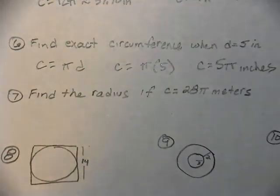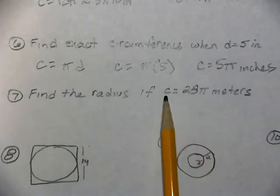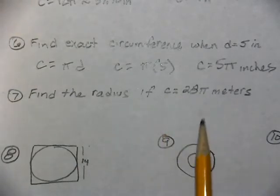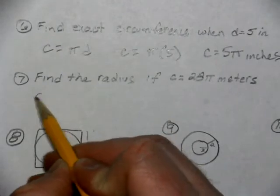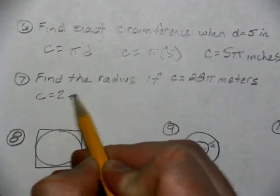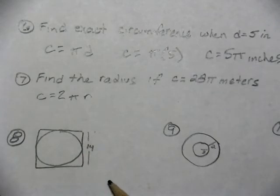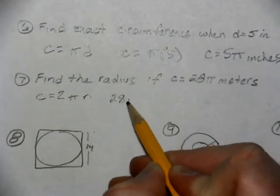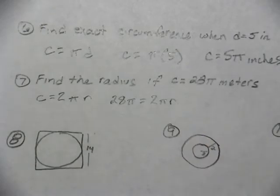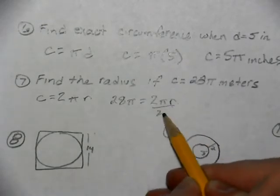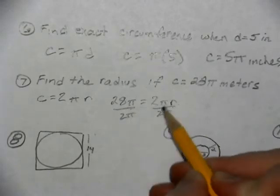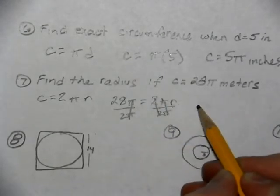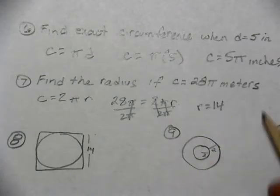We're going to find the radius if the circumference is 28π. Watch problems like this — they have the π part of the circumference. Don't skip the π; it makes the calculations a lot cleaner. So using C = 2πr, we get 28π = 2πr. Divide both sides by 2π, and our radius is 14 meters.